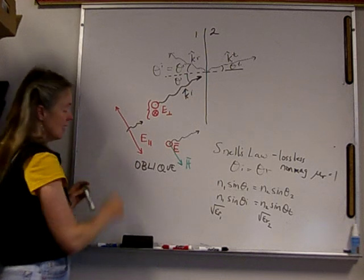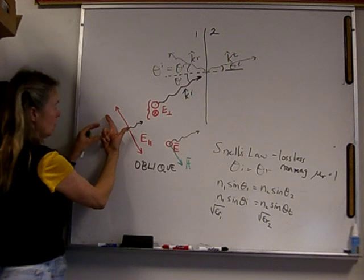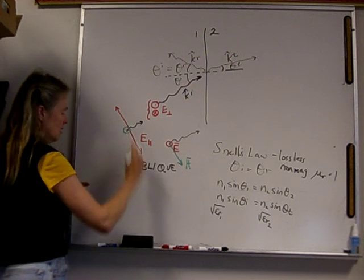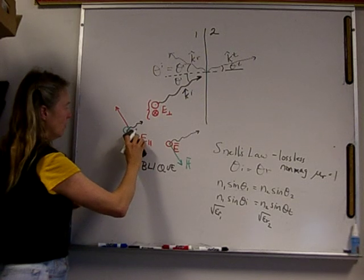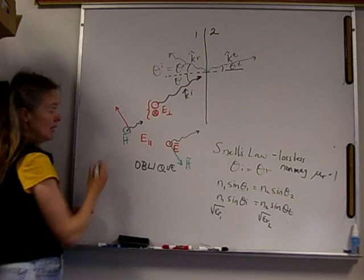Let's look at this case. We put our thumb in the direction of propagation, we put our finger in the direction of E, our third finger will show us where H is. So for the electric field vector going up like so, H would be in this direction.